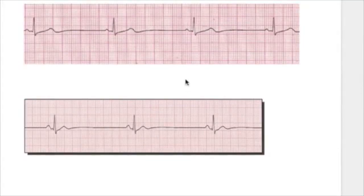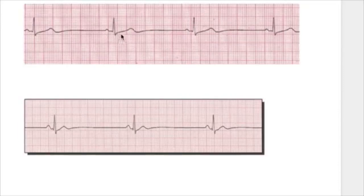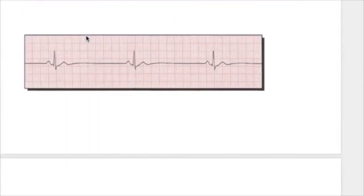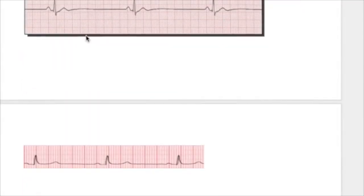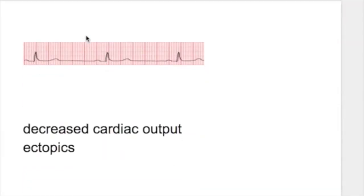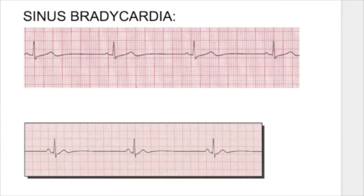Sinus bradycardia: heart rate is less than 60 and it fails to increase with exercise. The ECG is normal except that the QRS complex is contracted — that is, less than 0.12 seconds — but the rhythm is regular. A regular rhythm with slow rate and a contracted QRS complex characterizes sinus bradycardia.